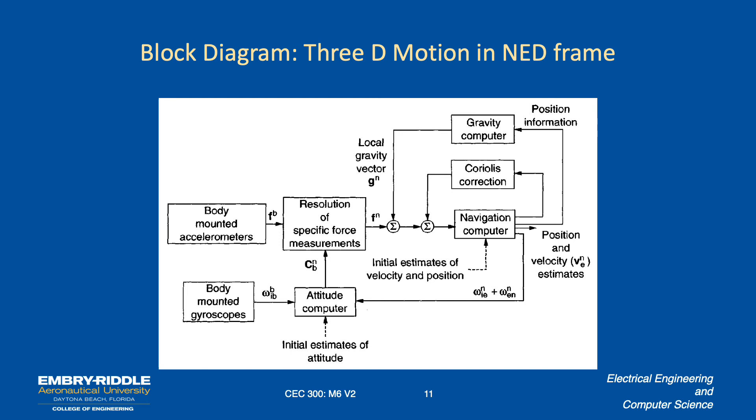And so that's what that first summation box is doing using information from the gravity computer, which is just going to be a table lookup of gravity information based on geographic location. So the position information is the index into the gravity computer and you get the local gravity vector out there.